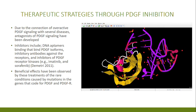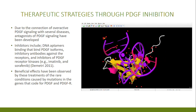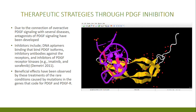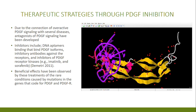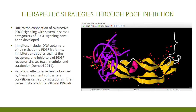Antagonists of PDGF signaling have been developed. Shown here, we have a DNA aptamer that binds to PDGF and prevents it from binding to its receptor. We also have inhibitory antibodies against the receptors and inhibitors of the receptor kinases. Beneficial effects have been observed in clinical trials as treatments for atherosclerosis and lung fibrosis.